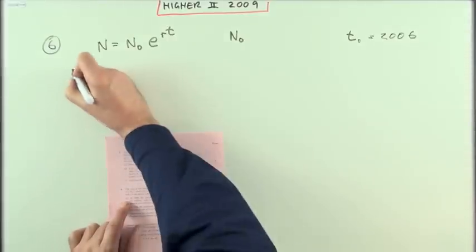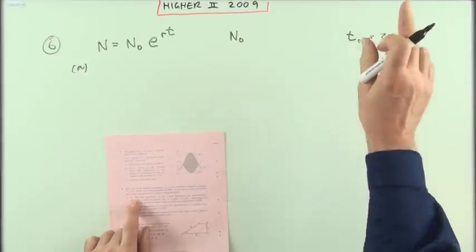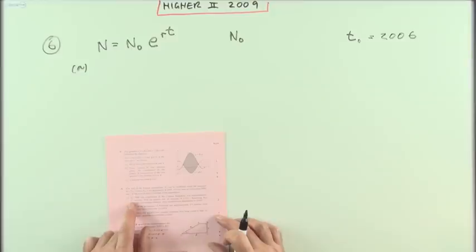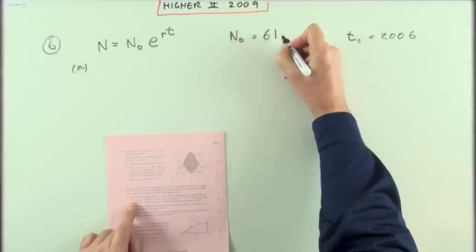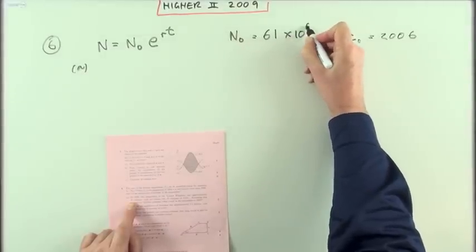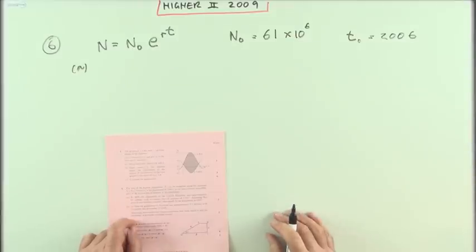Part A, in 2006 the population of the United Kingdom was approximately 61 million, so that was the N0. N0 is going to be 61, we'll just say million as in times 10 to the 6 but leave that out until the end.